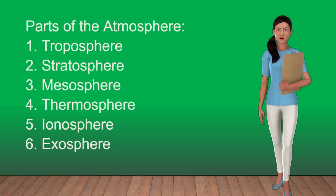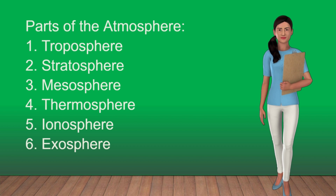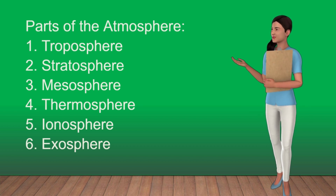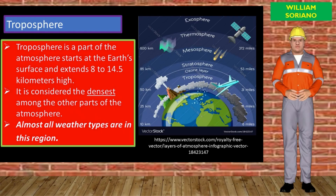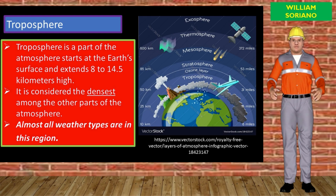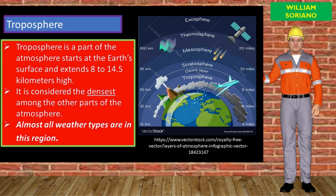The atmosphere is divided into different parts: 1. Troposphere, 2. Stratosphere, 3. Mesosphere, 4. Thermosphere, 5. Ionosphere, and 6. Exosphere. Let us explore these different parts. Number one, the Troposphere. The Troposphere is the part of the atmosphere that starts at the Earth's surface and extends 8 to 14.5 kilometers high.